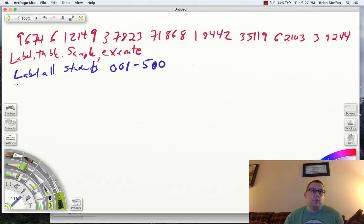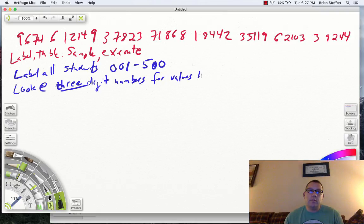Table is then, when I look at the table, I'm going to look at three-digit numbers. All right. Notice I wrote the number three, just so not to be confused with any of the threes that are up here in my table. All right. But I'm going to look at three-digit numbers for values between 001 and 500.